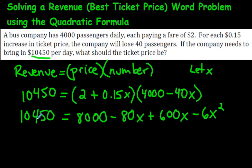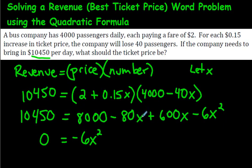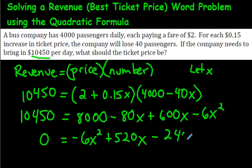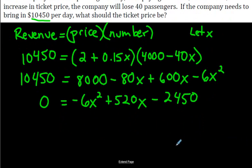Now bring 10,450 over to this side by subtracting it from both sides, leaving 0 on the right. On the left, we arrange in order: negative 6x² first, then combine the like terms negative 80x and 600x to get positive 520x, and finally 8,000 minus 10,450 equals negative 2,450. So the equation in standard form is: negative 6x² + 520x − 2,450 = 0. Big numbers are normal for a business situation.